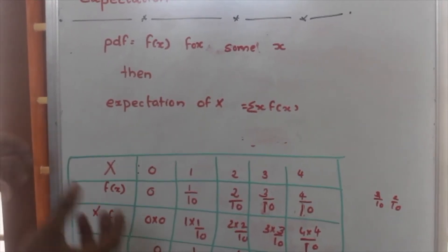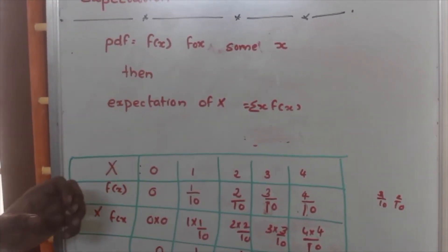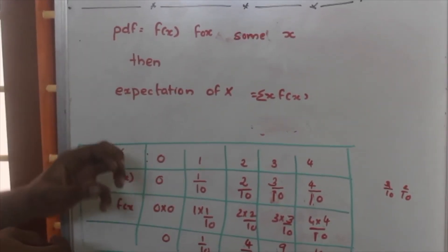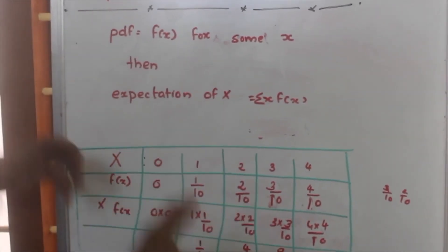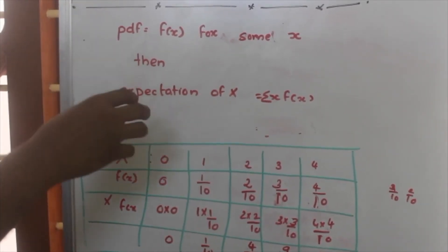But sometimes x can be given as x is in between 0 and 4. That means every value including 0, 0.1, 0.2, 0.3, etc. All values in between 0 and 4 will be coming for this probability distribution function.